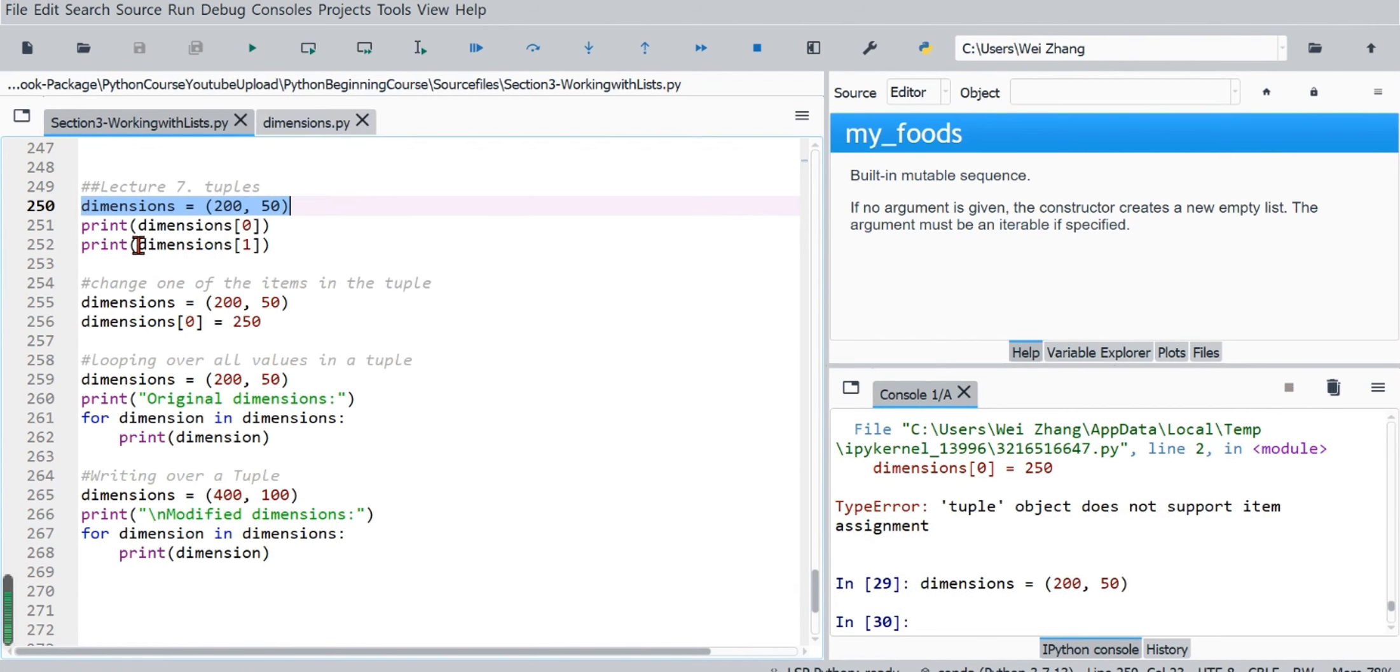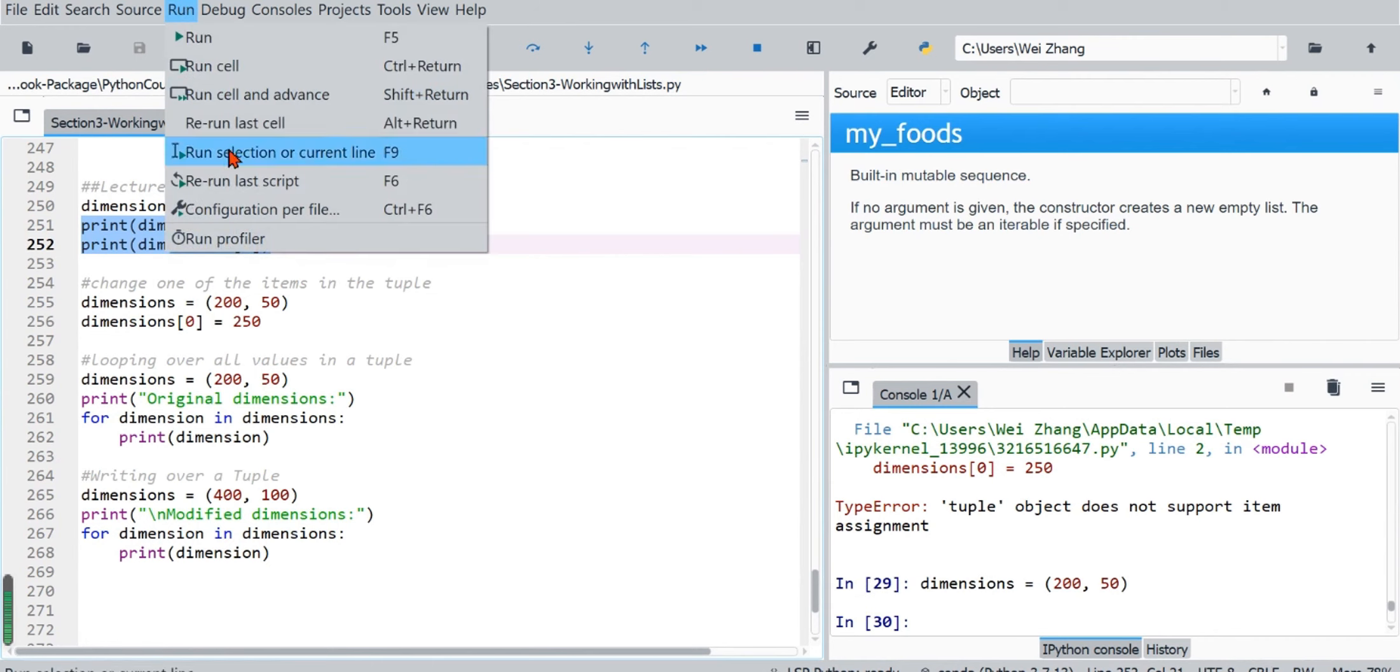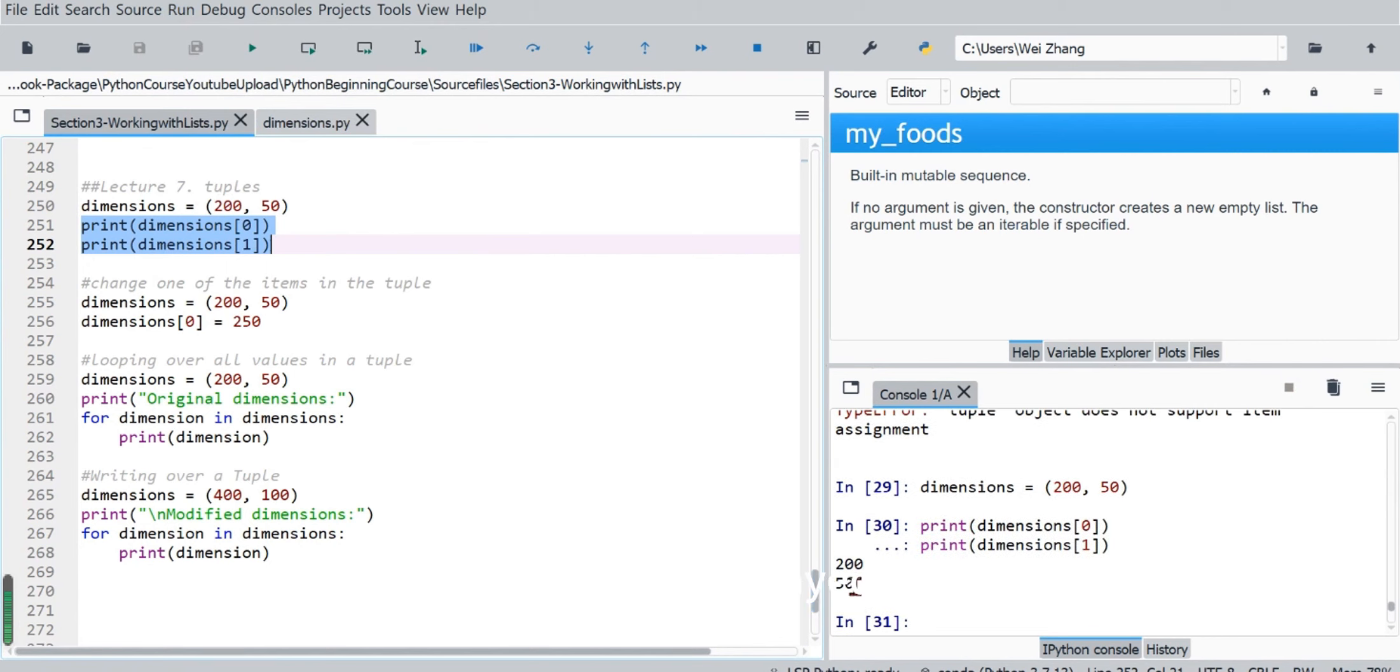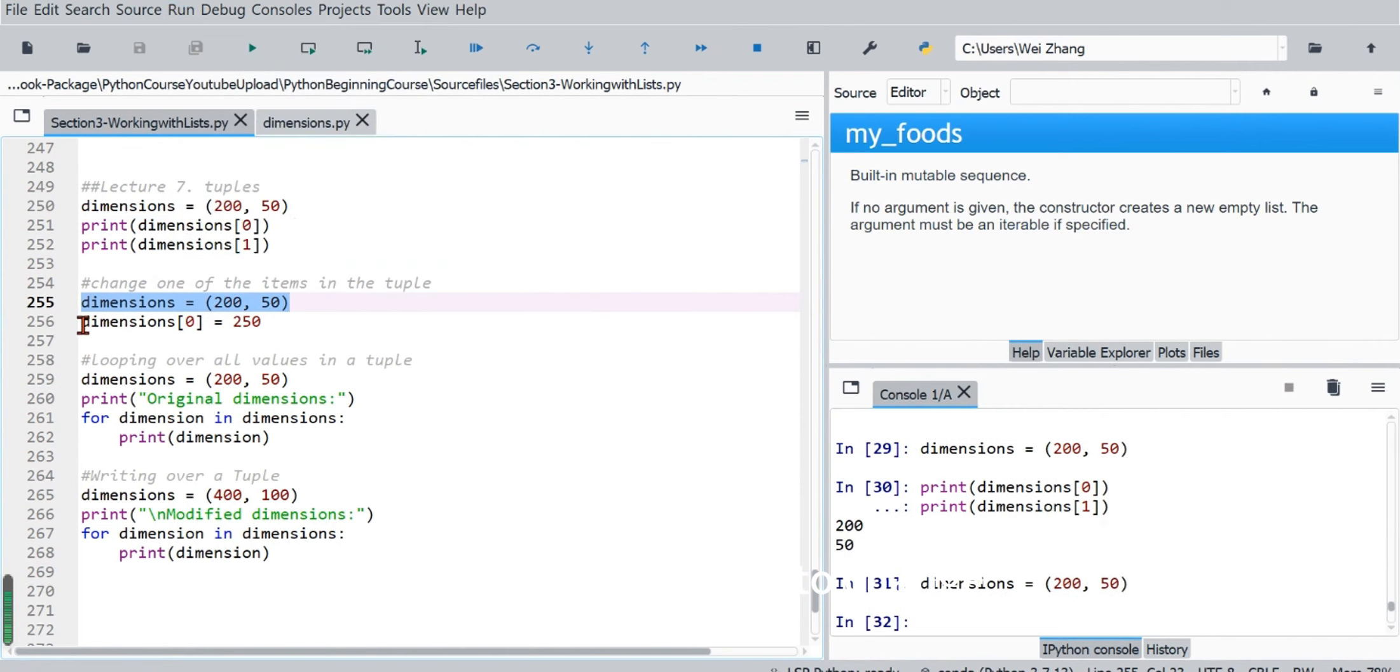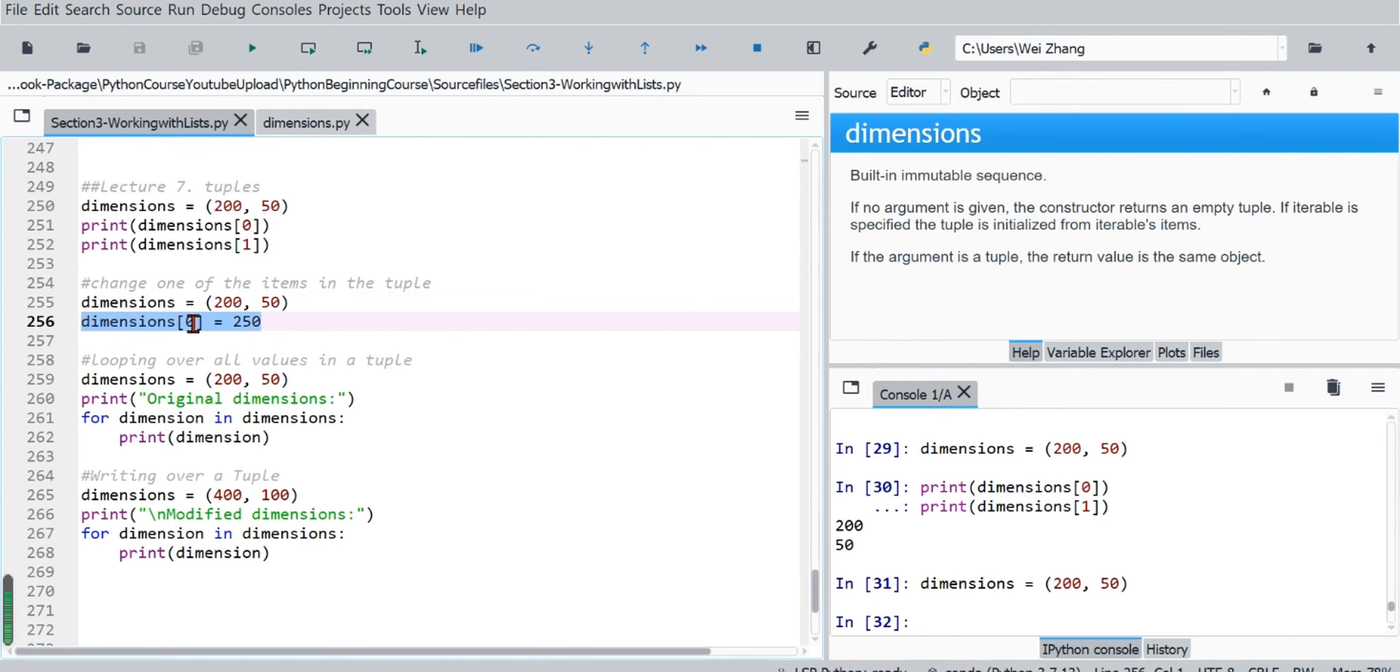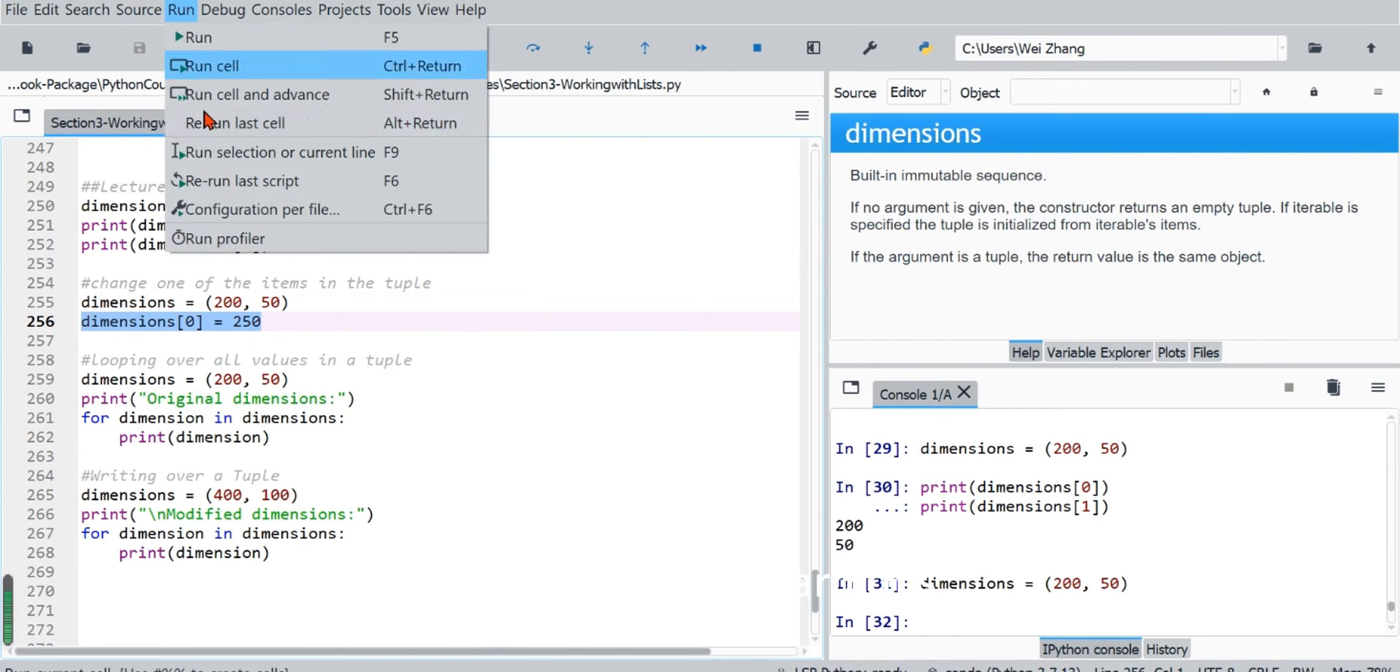Run. Then we print the first and the second item of the tuple, and 200, 50 are displayed. Then we try to change an item in the tuple. First we create the tuple, then we try to change the first item to 250. We run this.